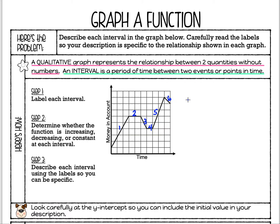That's my basic understanding — going up, staying the same, coming down. But when I describe it, I want to make sure I'm using the labels: time and money, because that's what this graph is about. It's a specific situation about time and the amount of money someone has in their account. There's an important hint: look carefully at the y-intercept, because you want to include that in your description.